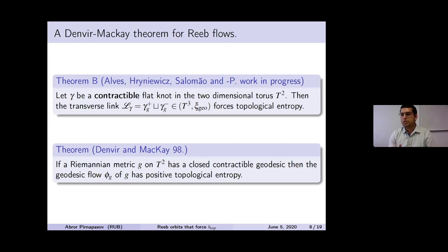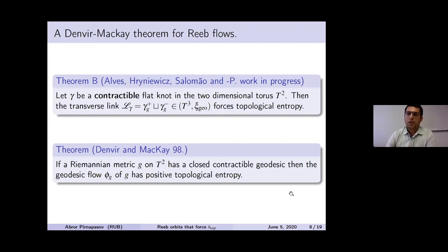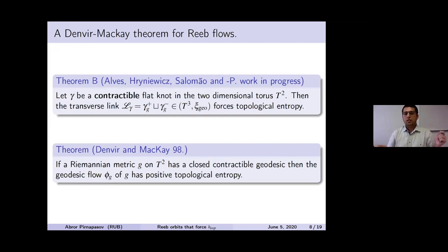Note that T^3 appears because the unit tangent bundle of T^2 is T^3. This also gives infinitely many different transverse links in T^3 with the standard contact structure which force topological entropy, and geometrically one can see how they are arranged.